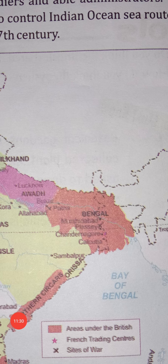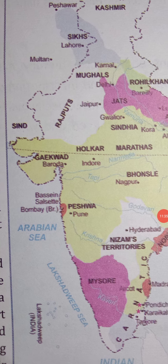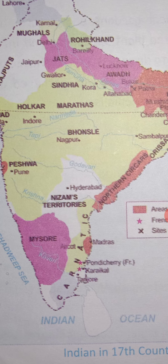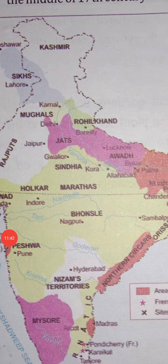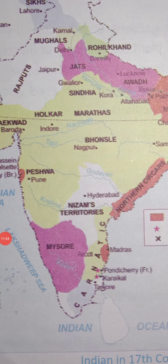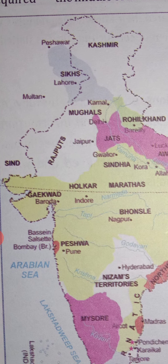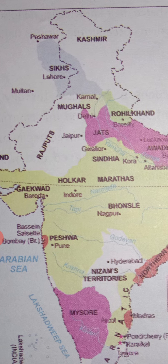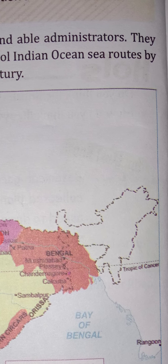Looking at the 17th century map, we can see Bengal in the north. There was also French trading in this area. The sites of wars can be seen mainly in Bengal. This shows the areas occupied in the 17th century — Britain had not yet fully established its presence.